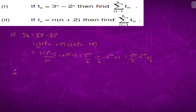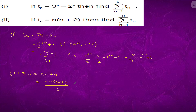Question 2: Summation of tₙ, which is summation of n squared plus 2n. It is n(n+1)(2n+1) upon 6 plus n(n+1). If you take LCM, which is n(n+1), result is 2n plus 7 upon 6.